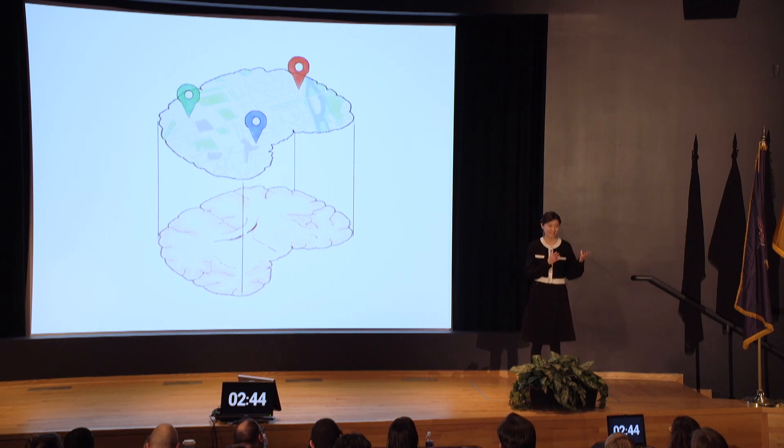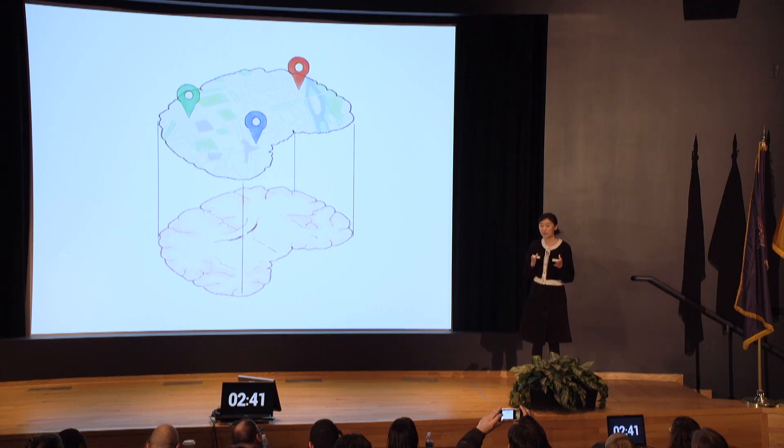When solving a problem like this, spatial information — the location of drug and disease — is important. For example, to play baseball, you meet your friends at the baseball field. You and them being in the same location is a prerequisite for the activity to happen. Similarly, the drug and the disease need to be at the same location for the cure.